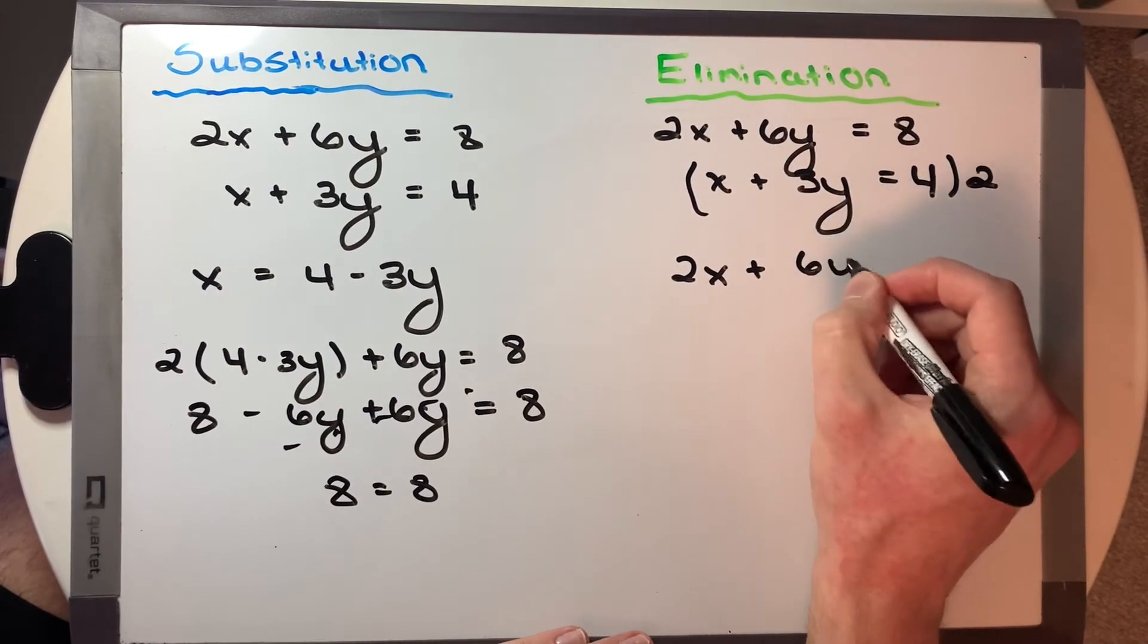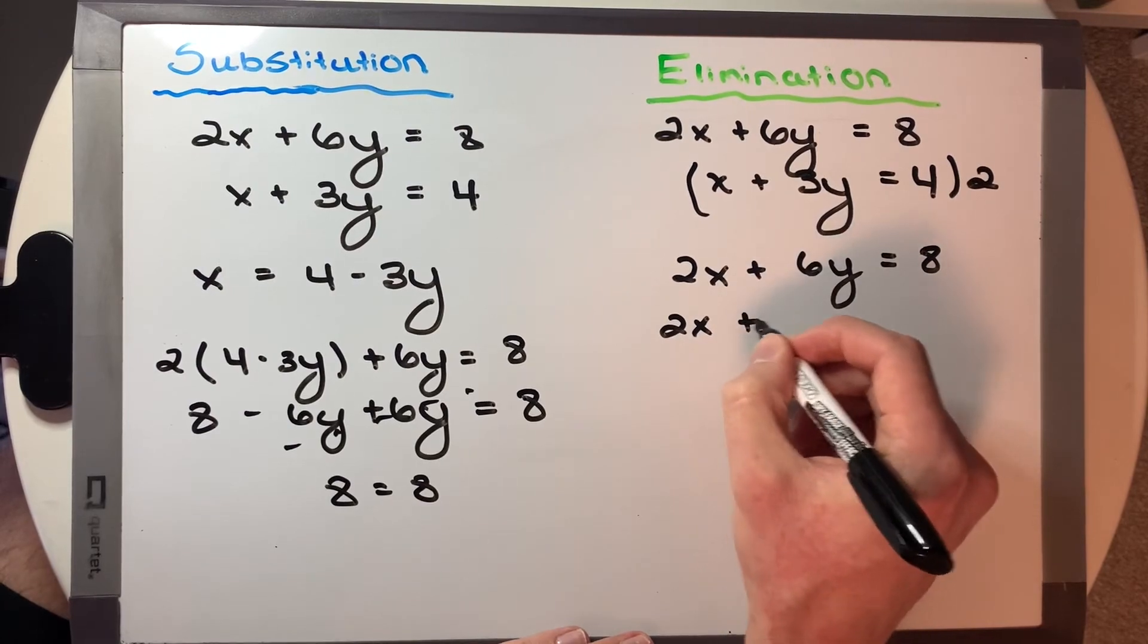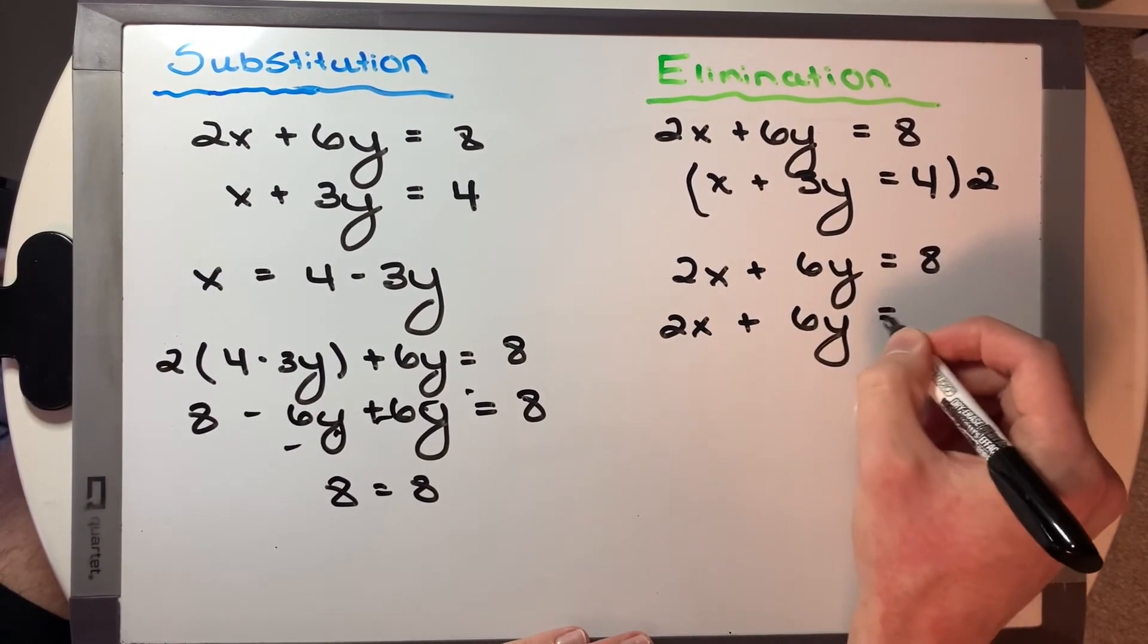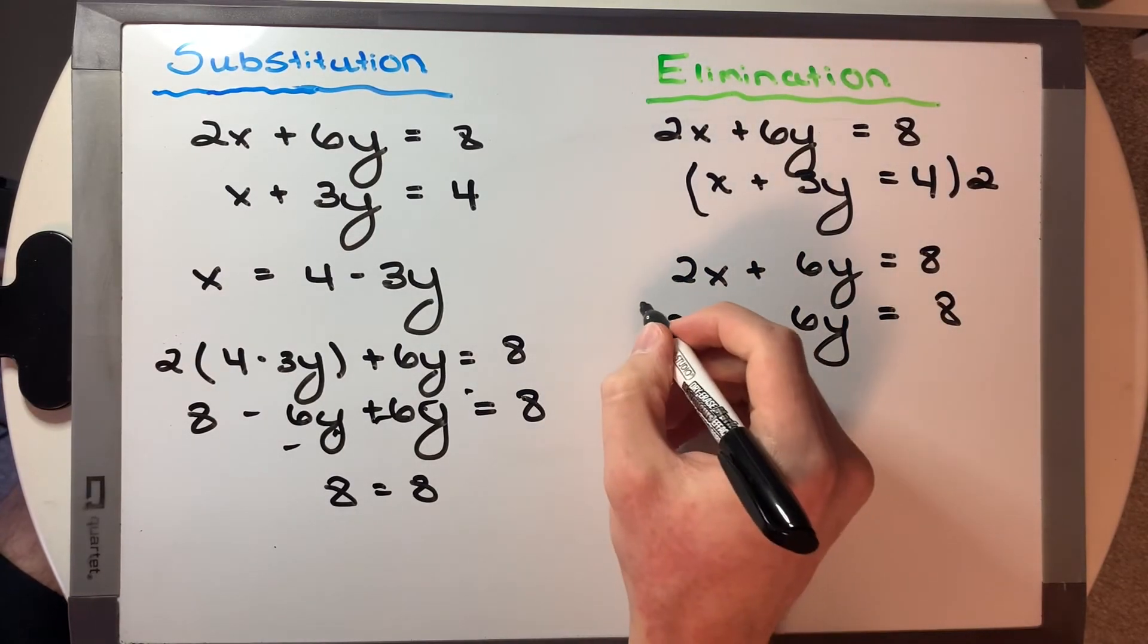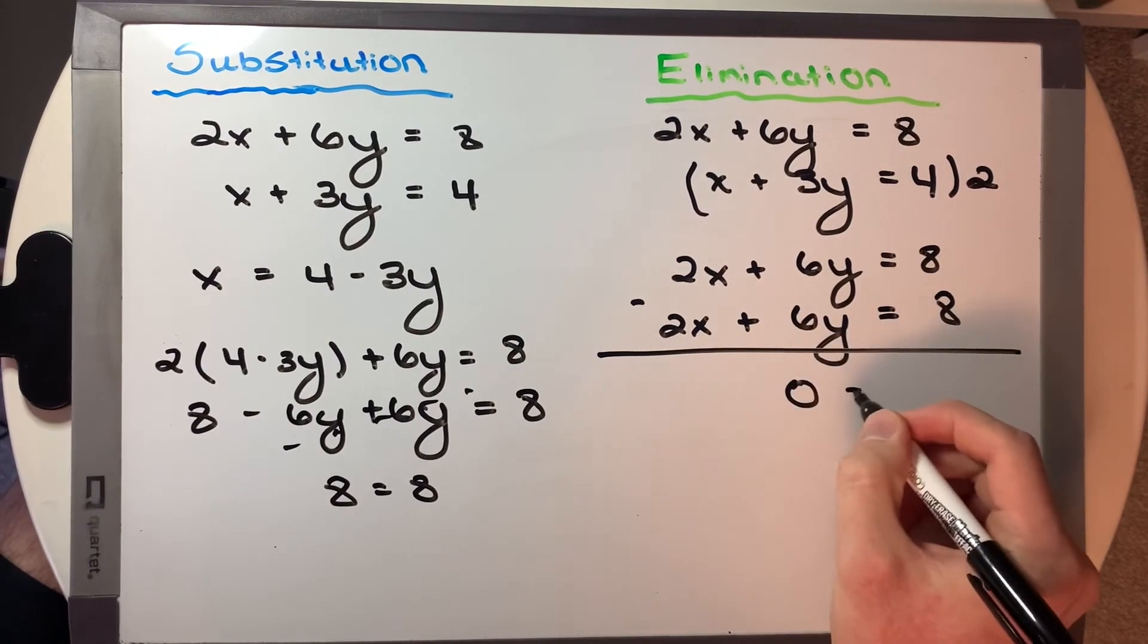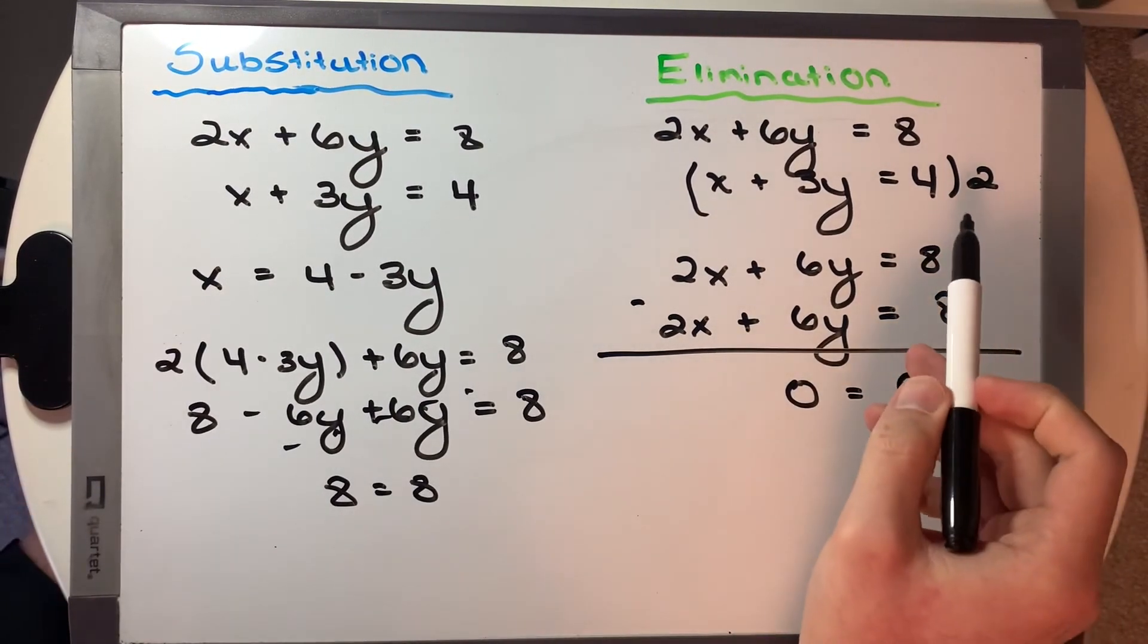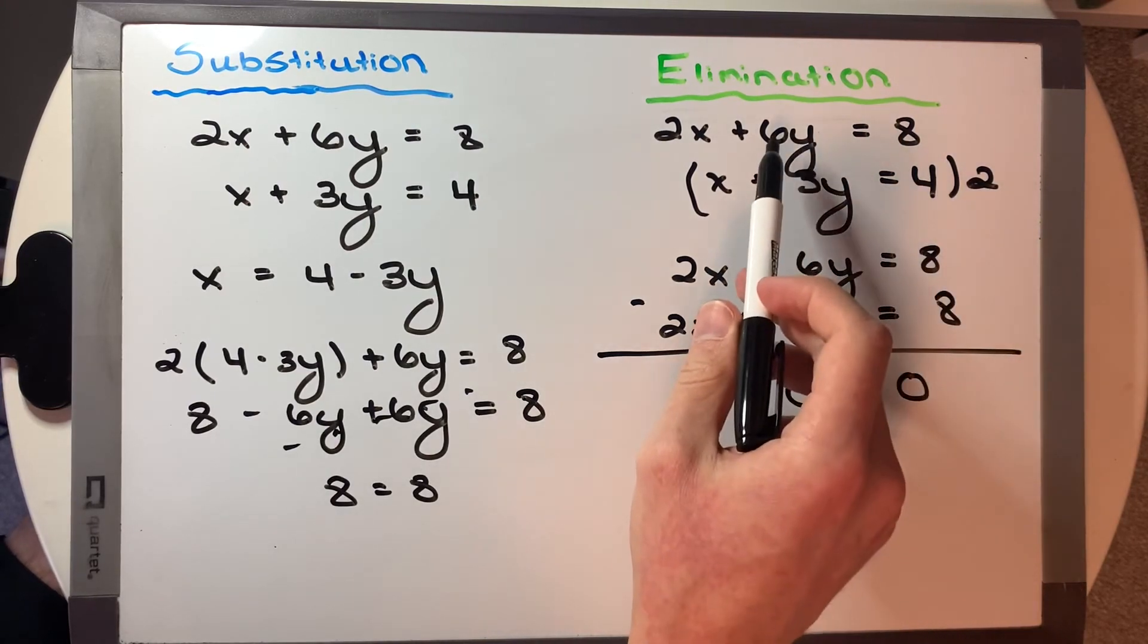we say 2x plus 6y equals 8, and 2x plus 6y equals 8. Strange. So we actually get the exact same equation. So what does this say? When we subtract these, we get 0 equals 0. As you can see, as soon as we multiplied the second equation by 2, we actually just got the exact same equation.